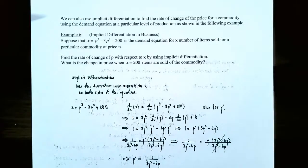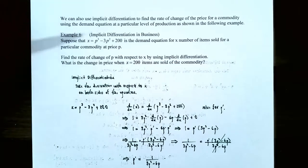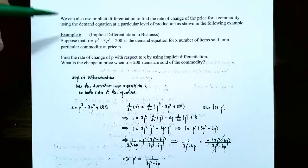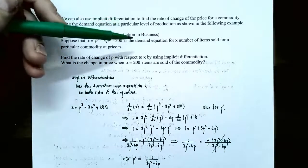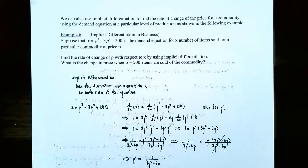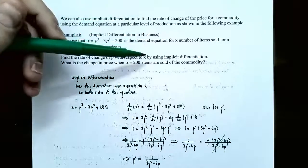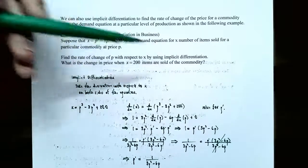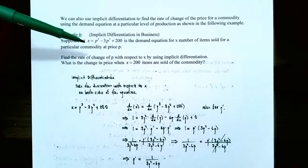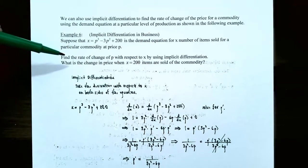Finding the slope of the tangent line is one application of implicit differentiation. We can also use it to find the rate of change of the price for a commodity using the demand equation at a particular level of production. Example 6: implicit differentiation in business. Suppose that x equals p cubed minus 3p squared plus 200, which gives the demand equation when x items are sold, where p represents the price. Find the rate of change of p with respect to x using implicit differentiation, and find the change in price when 200 items are sold.